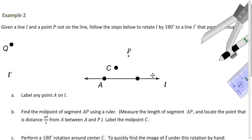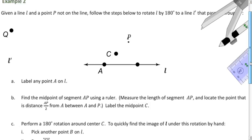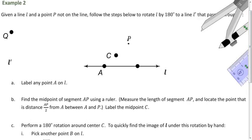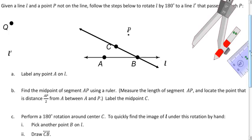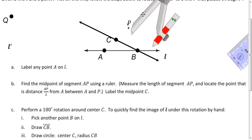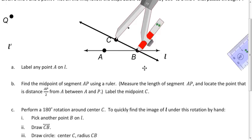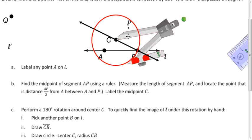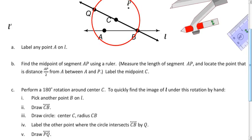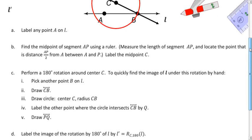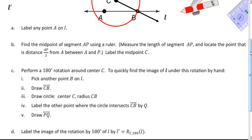Now we rotate line L 180 degrees around C, which should give us a line through P. Pick another point on our line and call it B. Connect C and B and draw a line through them. Draw a circle centered at C with radius CB — put the pivot on C, open to B, and draw the circle. Name the point where the circle intersects the line other than B as point Q. Connect P and Q with a line — we call that line, the image of line L, L prime.